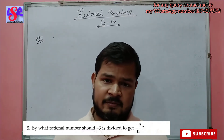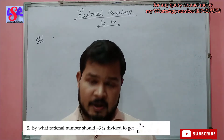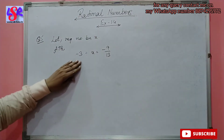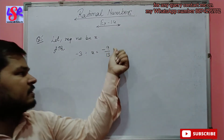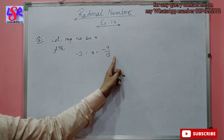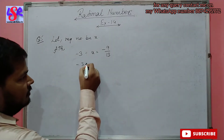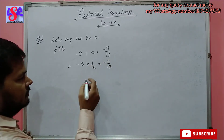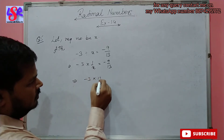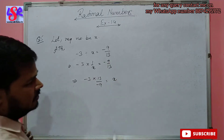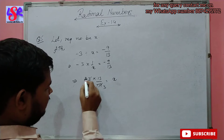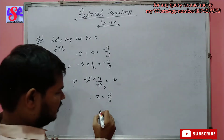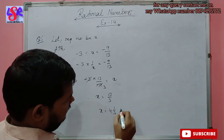Now moving to question number 5. By what rational number should minus 3 be divided to get minus 9 upon 13 as the answer? Let the required number be x. According to the question, minus 3 divided by x equals minus 9 upon 13. This gives minus 3 into 1 upon x equals minus 9 upon 13. Solving for x, the minus signs cancel out, giving x equals 13 upon 3. Converting to mixed form, x equals 4 whole 1 upon 3 as the answer.